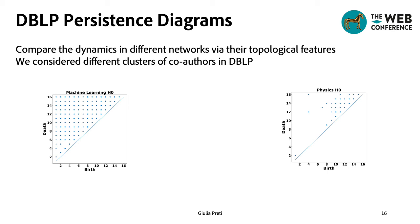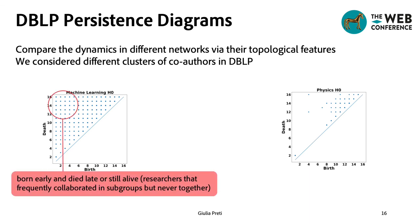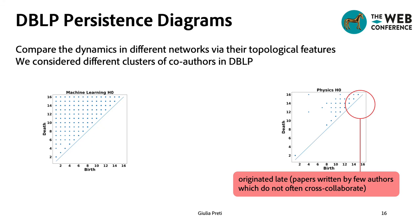As we can see, in contrast to the physics diagrams, the machine learning diagram presents points in the upper left corner. These indicate features with long persistence and thus indicate that many machine learning researchers frequently collaborated in subgroups, but never together.